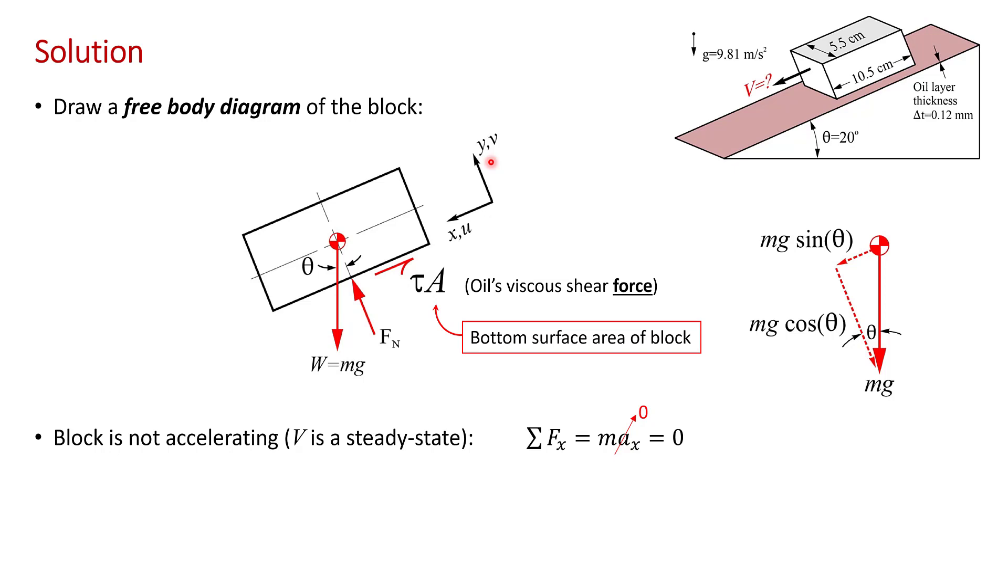There are only two forces in the X direction. One is the X component of weight, and over here I've shown the weight vector Mg, and I've resolved it into the component normal to the plane, Mg cos theta, and the component that drives the motion of the block, the component in the X direction, which is Mg sin theta.